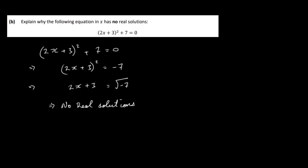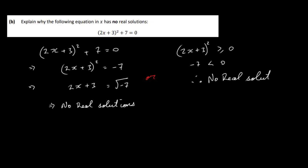Also, you could say 2x plus 3 all squared is going to be greater than or equal to 0, but minus 7 is less than 0. Therefore no real solutions — because 2x plus 3 all squared has to be positive or equal to zero, but minus 7 is not, so there are no real solutions.